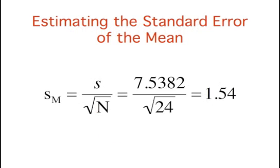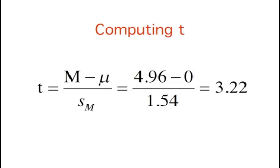Getting back to our ADHD example, we still need to calculate the estimated standard error of the mean to complete our formula. The estimated standard error of the mean is computed by dividing the standard deviation by the square root of n. It equals 1.54. n is 24 because there were 24 subjects, even though the data from only the first four were shown previously. Now we can compute t. The mean of the 24 difference scores is 4.96. We subtract the hypothesized population mean of zero, then divide by the estimated standard error of the mean of 1.54. This gives us a t value of 3.22.